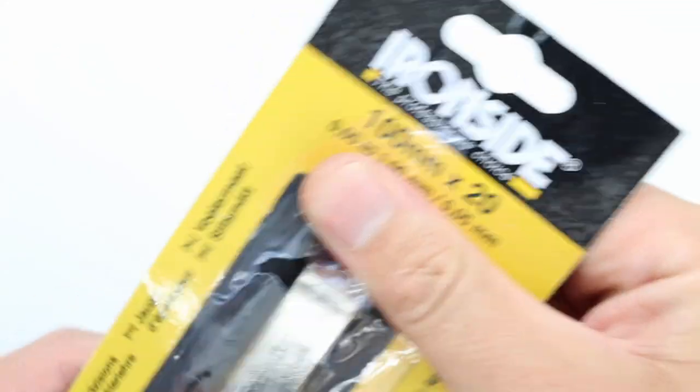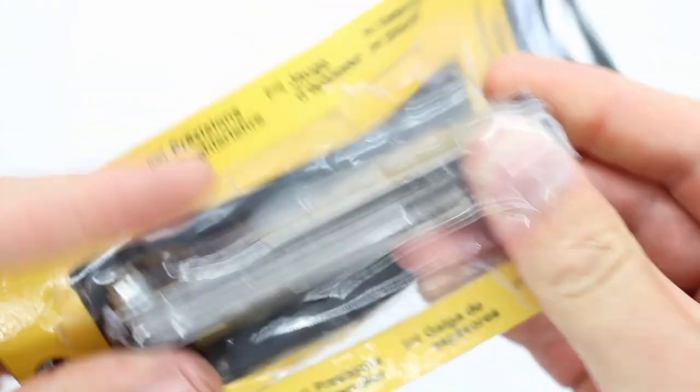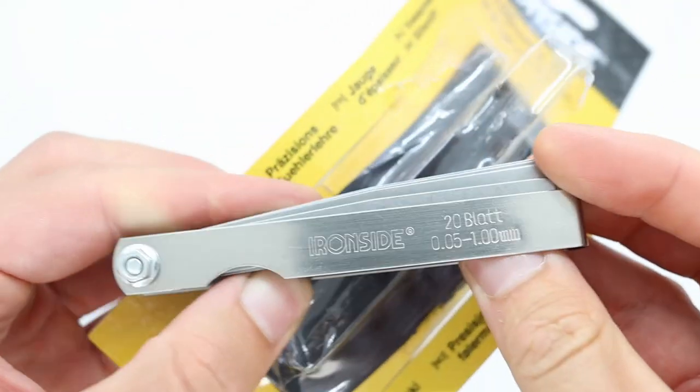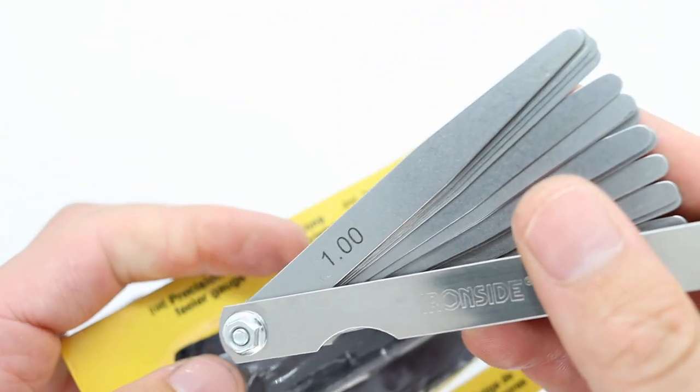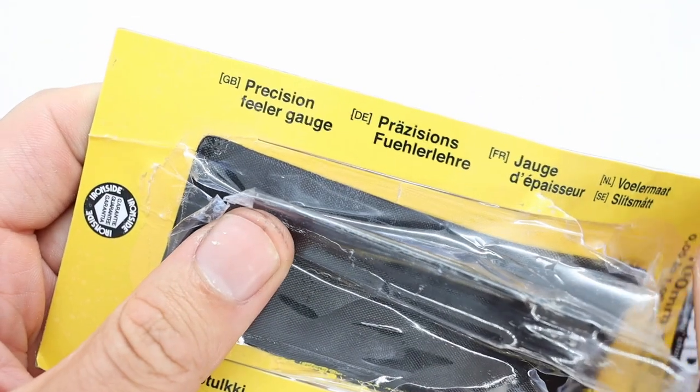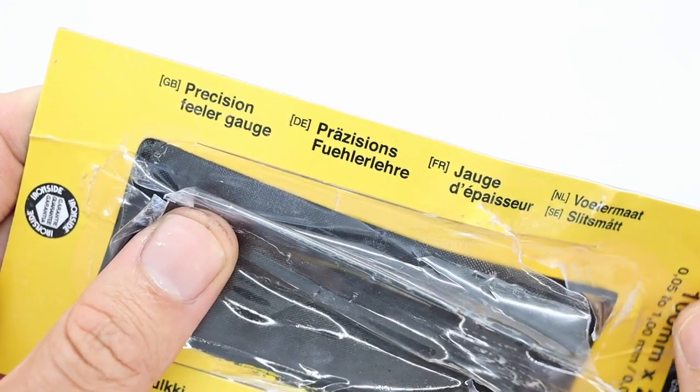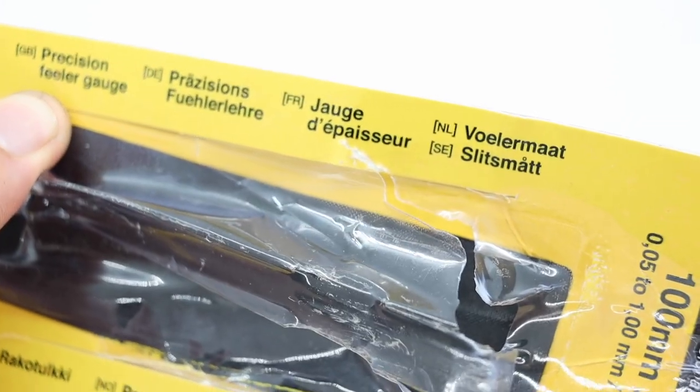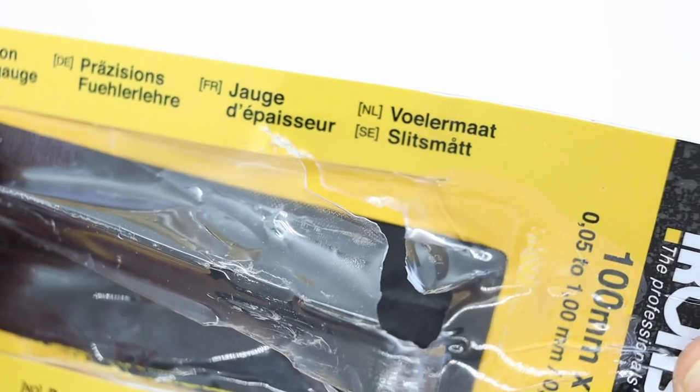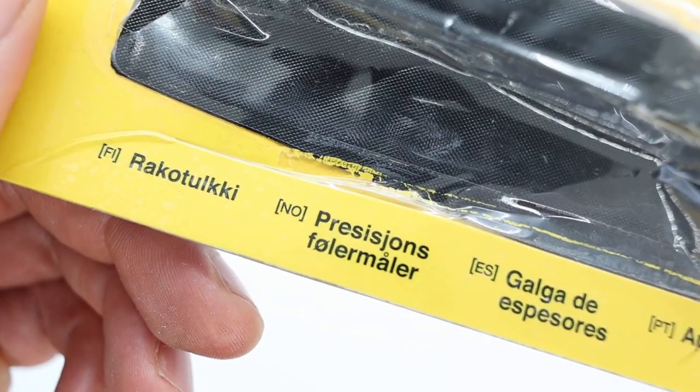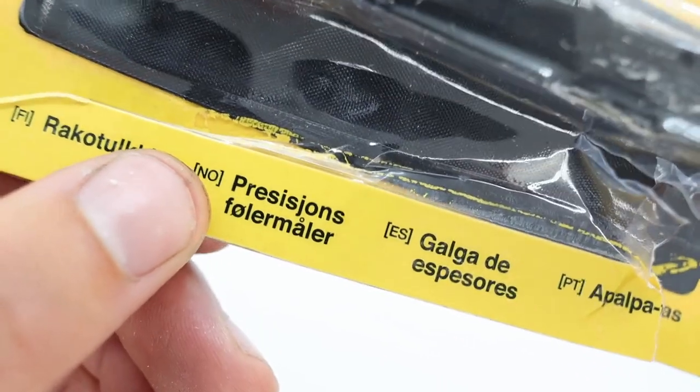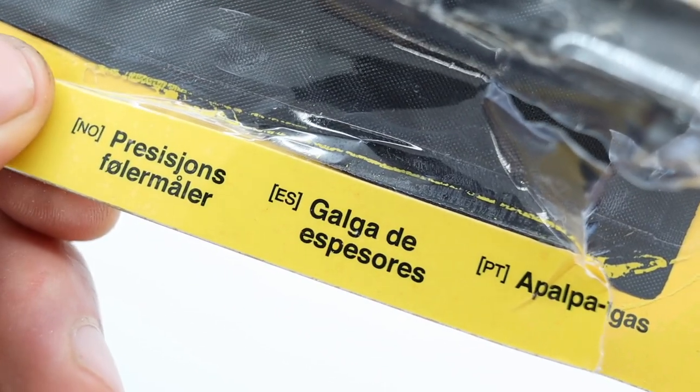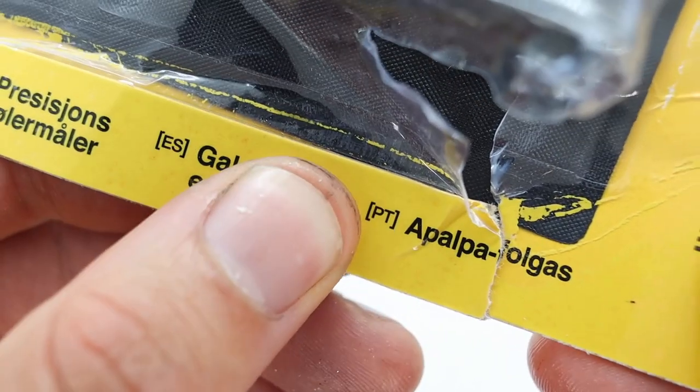So to measure the idle gap, we can use this - Ironside, it's called the brand. It's this thing that you can measure gaps with. It's called a precision feeler gauge. And in Deutsch, Precisions Führer Lerger. Francais, Jog Dépesseur. Dutch, Wollermatt. Swedish, Finnish, Rappaporte. Norwegian, Precisions Führer Lerger. Spanish, Galdale Espesore. Portuguese, Apalpafolgas.